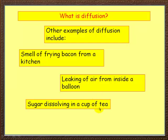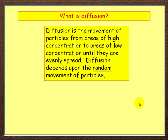Lastly, if you have sugar in your tea and you stir it and dissolve it, the sweetness doesn't taste in just one part of the cup — it's all over the tea. So diffusion has spread it out. By definition, diffusion is the movement of particles from areas of high concentration to areas of low concentration until they are evenly spread.